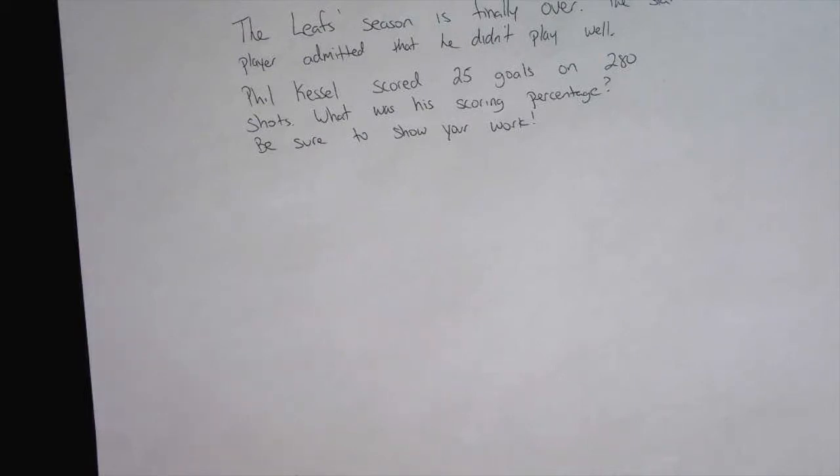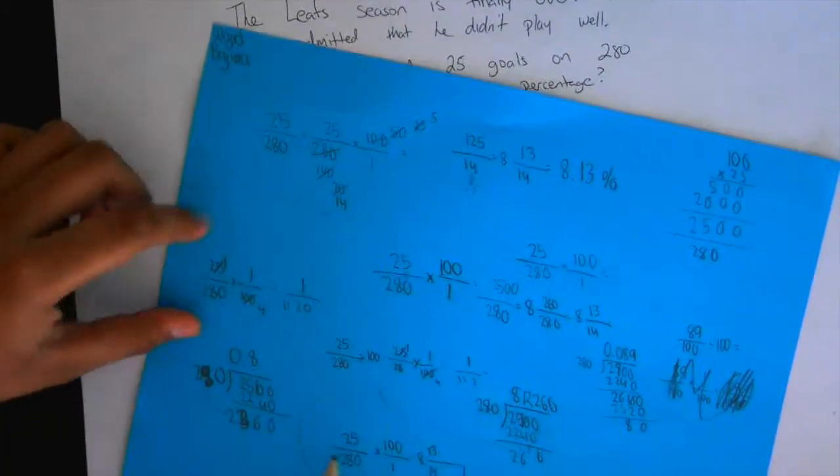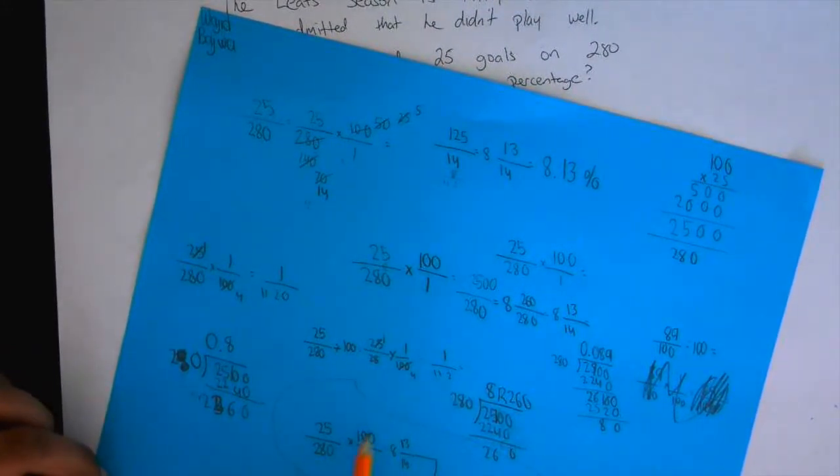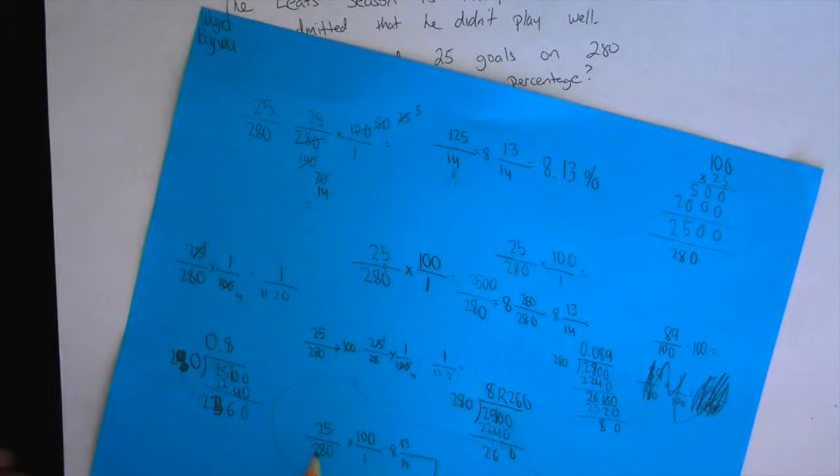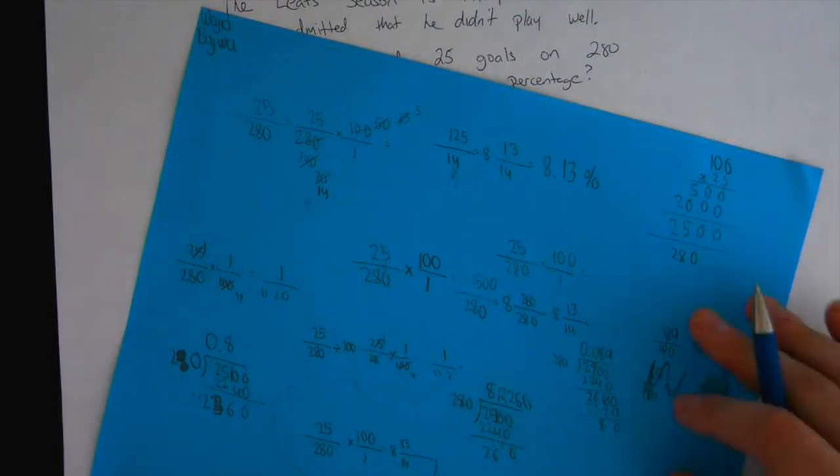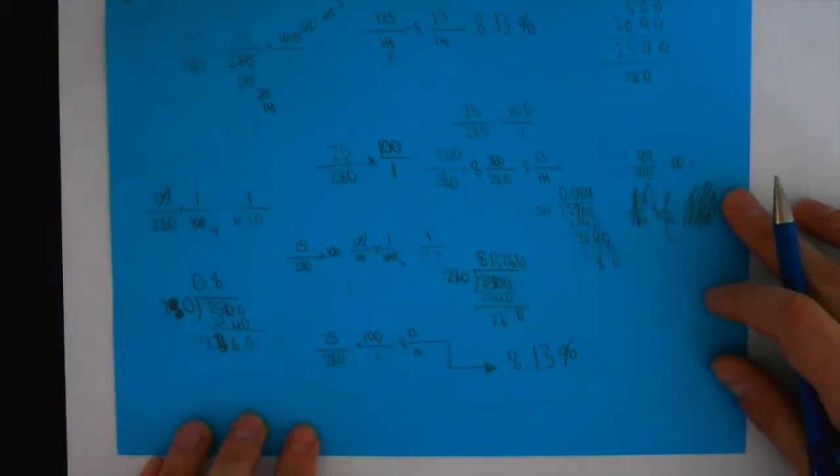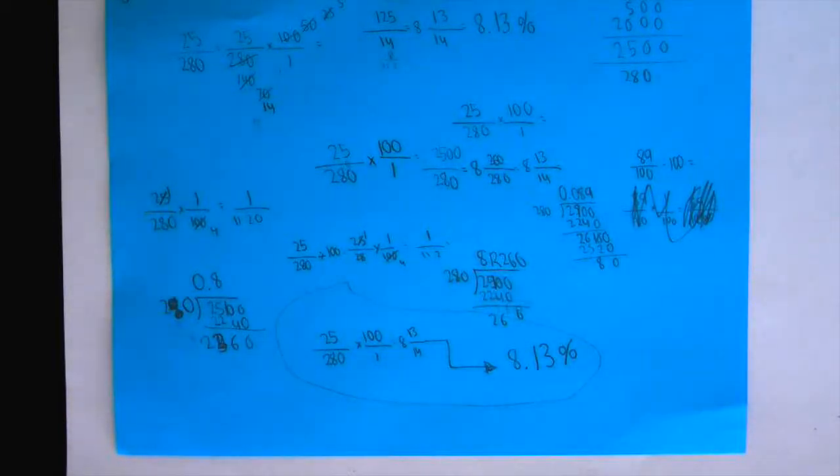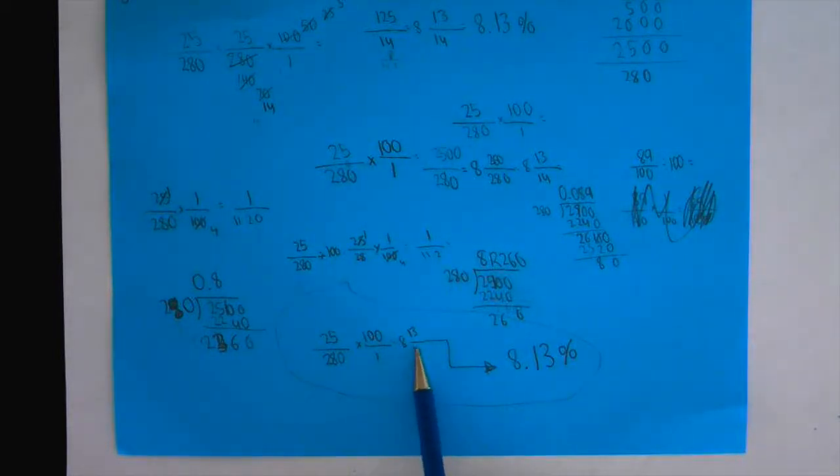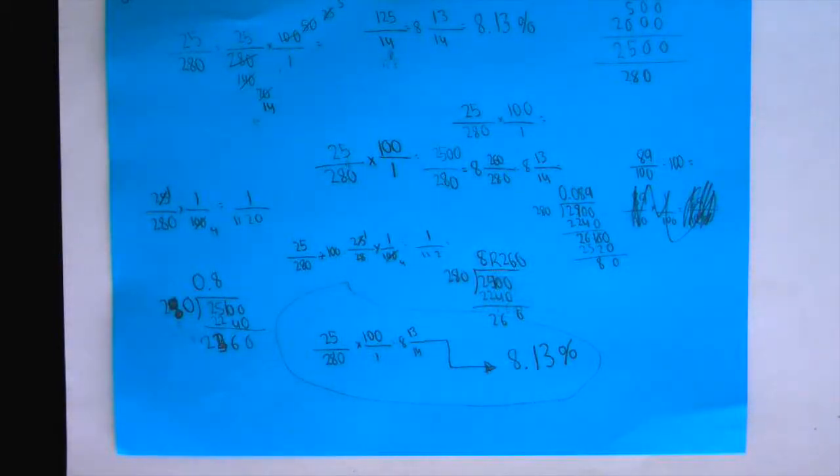Does anyone else have any ideas to come help him get his answer? What I did was, since Phil Kessel scored 25 goals out of 280 shots, I multiplied it by 100 because percentages are out of 100. So I multiplied it. It gave me a mixed fraction of 8 and 13 over 14. So now I got 8.13%. Okay, so I like your strategy. Can anyone see what slight error he made on his calculations here? What was a slight error here? Because he gave a fraction 8 and 13 over 14, then he gave me a decimal of 8.13.